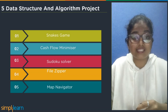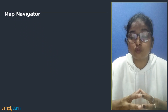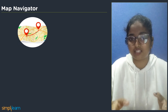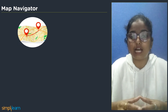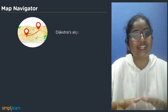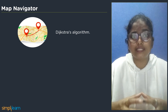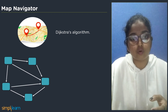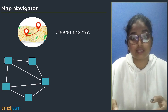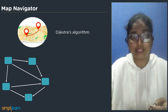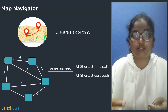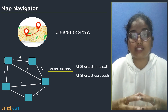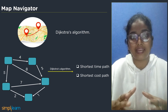Last but not least, our fifth project is a map navigator. Google Maps is an efficient application for showing the shortest path from source to destination, and it is built using Dijkstra's algorithm. We can also build a similar application for the metro, considering stations as nodes and distances between stations as edges. Using Dijkstra's algorithm, we can find the shortest time path or shortest cost path. Dijkstra's algorithm is efficient in finding the minimum distance between nodes using edge values.